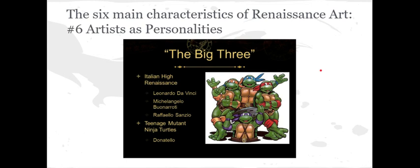Finally, the sixth characteristic is that artists have personalities. In pre-Renaissance art, we don't really know a lot about the artists. But in the Renaissance, we start to see artists as personalities. In the activity you're going to do today, you'll look at two big personalities from this time period — we usually refer to them as the Teenage Mutant Ninja Turtles: Leonardo, Michelangelo, Raphael, and Donatello. You're going to do a little research and learn about some of these artists. Thanks for watching — we'll see you next time.